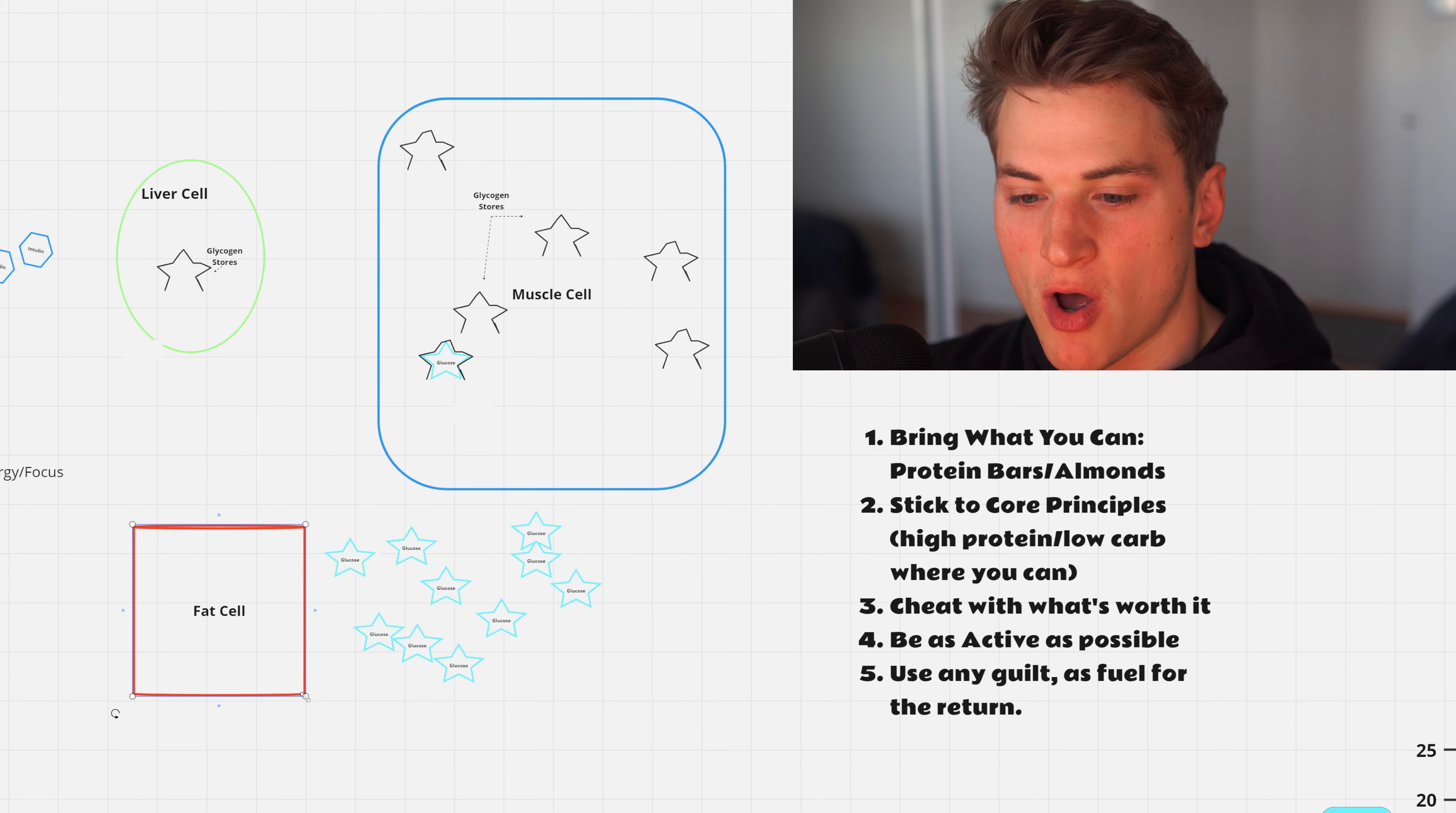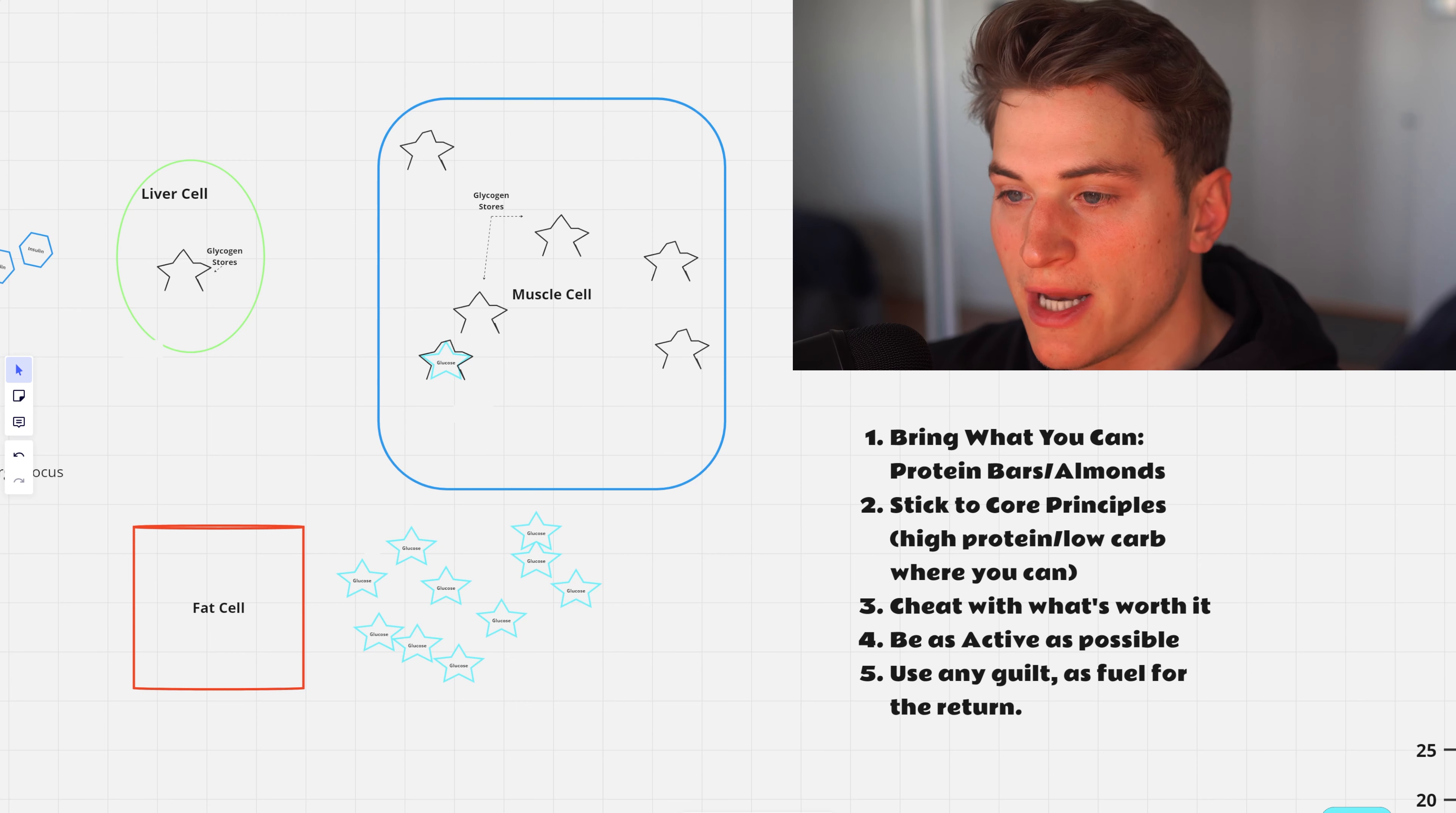When you time it with carb and calorie cycling, when we are on vacation or traveling and we eat our desserts or drink, the extra glucose instead of going right into fat first is actually fed to the liver cell. Once the liver cell is full - which it doesn't have a lot of storage but it has some - it goes to the muscle cell first before it actually goes into the fat cell.